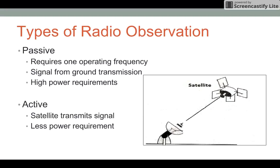We have two different types of radio observation: passive and active. Passive uses more power than active as it takes a signal from the ground transmission to be beamed up to the satellite and reflected back down in order to determine the position and the velocity of the satellite.